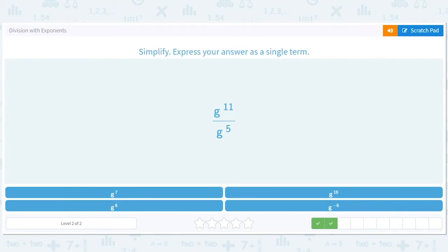Okay eleven minus five is six. So if there's a bigger number on top than on bottom you'll end up with a positive exponent. If there's a bigger number on the bottom than the top you'll end up with a negative exponent. So in this case you'll end up with six g's on top so it's going to be g to the sixth.